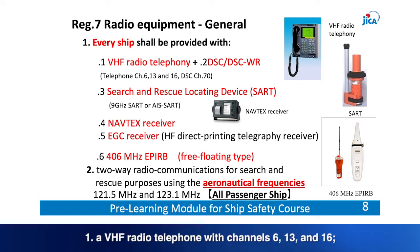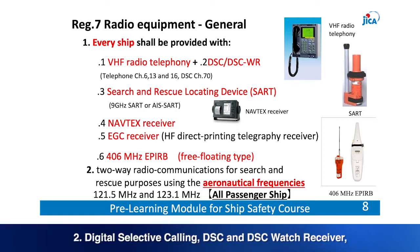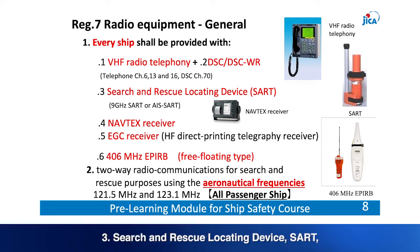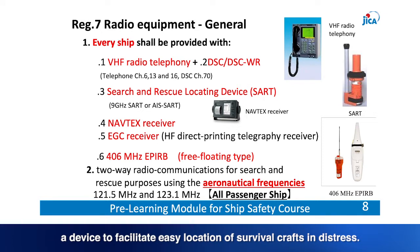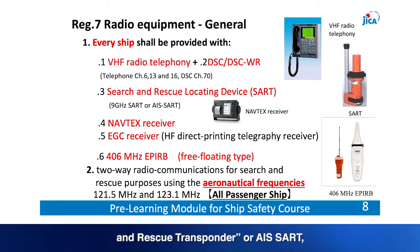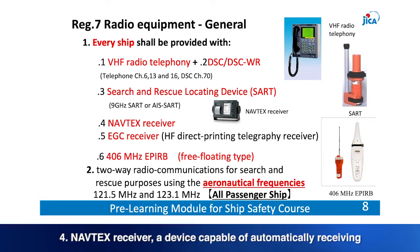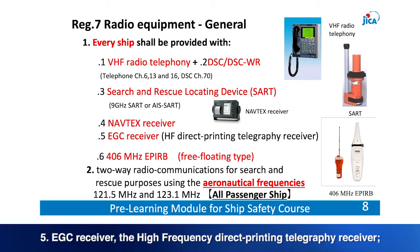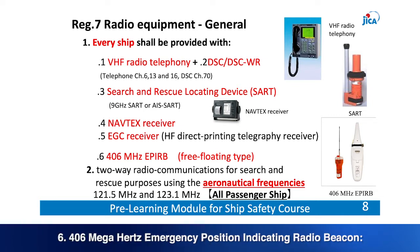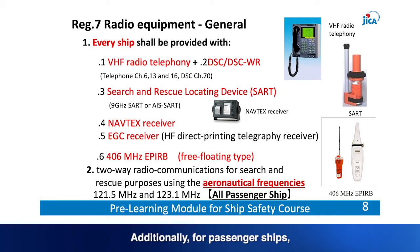Every ship shall be provided with radio equipment as follows: 1. A VHF radio telephone with channels 6, 13 and 16. 2. Digital Selective Calling (DSC) and DSC watch receiver — the device for making and receiving distress signals. 3. Search and Rescue Locating Device (SART) to facilitate easy location of survival crafts in distress — either 9 GHz search and rescue transponder or AIS-SART. 4. Navtex receiver capable of automatically receiving International Marine Safety Information Service broadcast. 5. EGC receiver — the high-frequency direct-printing telegraphy receiver. 6. A 406 MHz Emergency Position Indicating Radio Beacon (EPIRB), a free-floating type radio buoy that will automatically transmit distress signal when the ship sinks. Additionally, for passenger ships, a two-way on-scene radio communication device using aeronautical frequencies shall be provided.